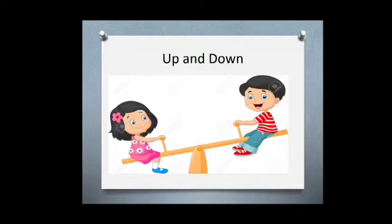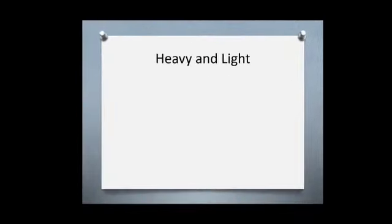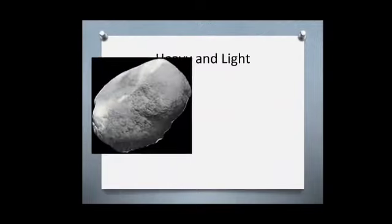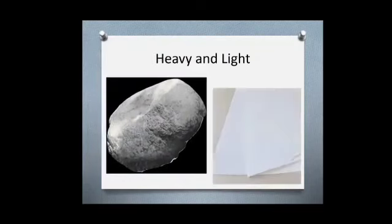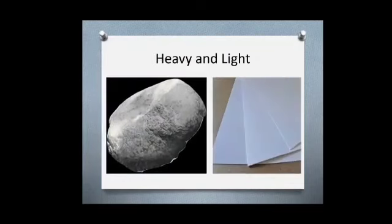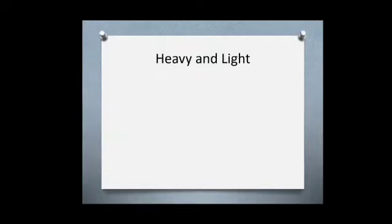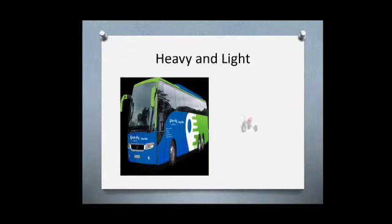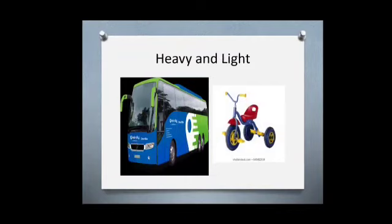Our next concept is heavy and light. Here we can see two objects — a stone and a paper. A stone is heavy to lift whereas paper is lighter to carry. In the next picture we have a bus and a tricycle. The bus is heavy and the tricycle is light in weight.